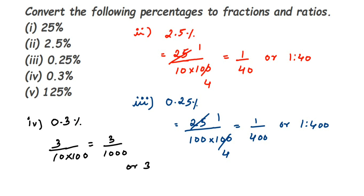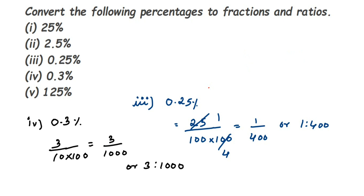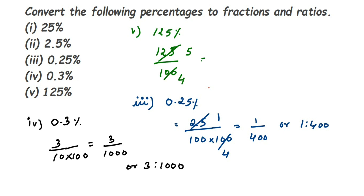The last question is 125%. Remove the percentage sign: 125 divided by 100. Cancelling using the 25 times table — 25 fives are 125 and 25 fours are 100 — this equals 5 by 4. That is the fraction. As a ratio it will be 5 is to 4. Very simple!